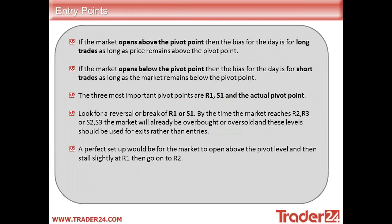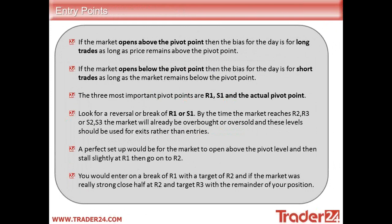A perfect setup would be for the market to open above the pivot level and stall slightly at R1 and then go on to R2 — if you're going long. You will enter on a break of R1 with the target of R2, and if the market was really strong, close half at R2 and target R3 with the remainder of your position. That requires just a little bit of active management.